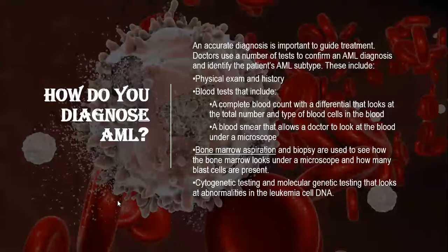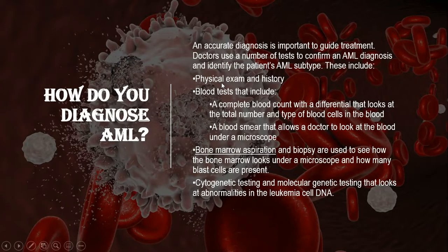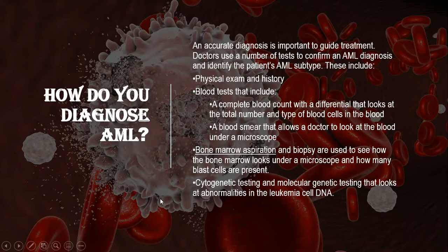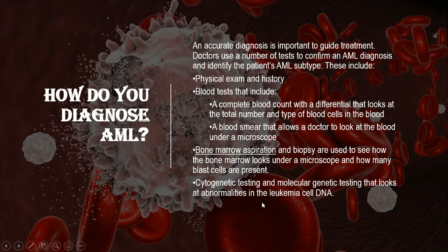Diagnosis of AML involves: a physical examination and patient history; blood tests including a complete blood count with differential that looks at the total number and type of blood cells; a blood smear allowing the doctor to examine blood under a microscope; bone marrow aspiration and biopsy to see how the bone marrow looks and how many blast cells are present; and cytogenetic and molecular genetic testing that looks at abnormalities in the leukemia cell DNA.